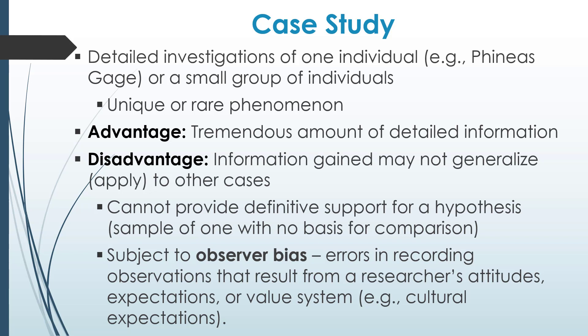A researcher's value system may influence the way they see the data. For example, a researcher from a different culture than the individual being investigated may misinterpret that individual's behaviors or motivations. Observer bias involves a researcher seeing what they expect to see, and those expectations are influenced by their attitudes, their expectations, or their value systems.